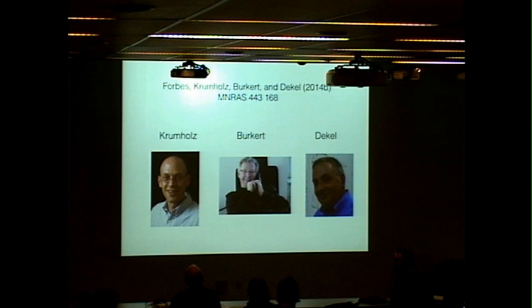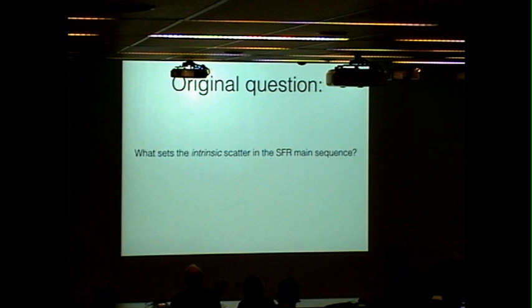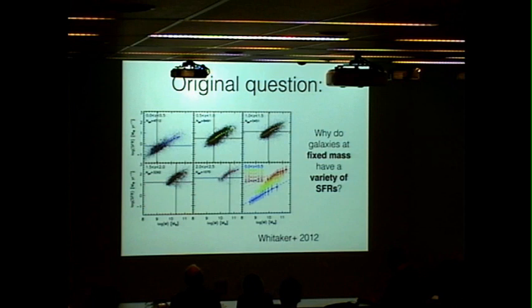The original question that we wanted to answer is, what sets the intrinsic scatter in the star-forming main sequence? So I should tell you what the star-forming main sequence is. It's the correlation between stellar mass and star formation rate in star-forming galaxies. It exists across a variety of redshifts, and it has some finite scatter, about a factor of two. So the question we want to answer is, why do galaxies at a fixed mass have a variety of star formation rates?